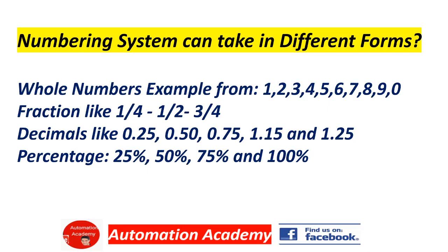Numbering systems can take different forms: whole numbers, for example 1, 2, 3, 4, 5, 6, 7, 8, 9, 0; fractions like 1/4, 1/2, and 3/4; decimals like 0.25, 0.50, 0.75, 1.15, and 1.25; and percentages 25%, 50%, 75%, and 100%.